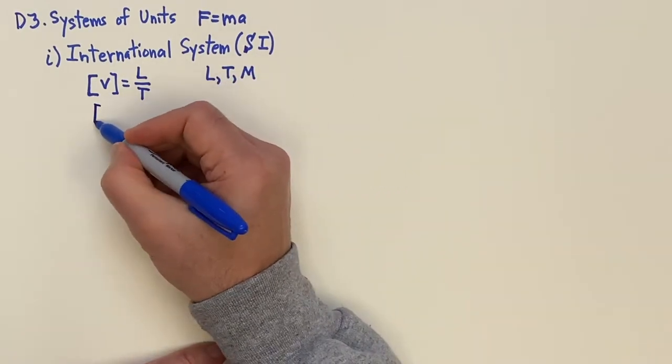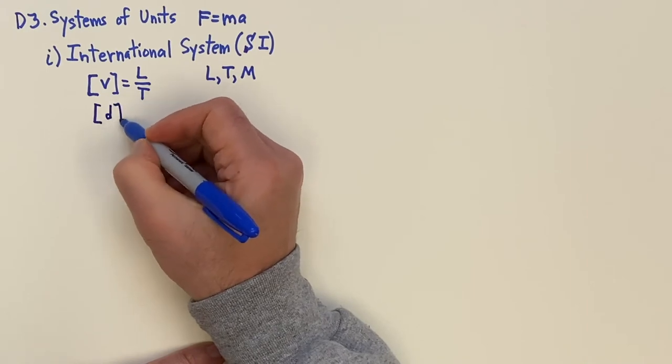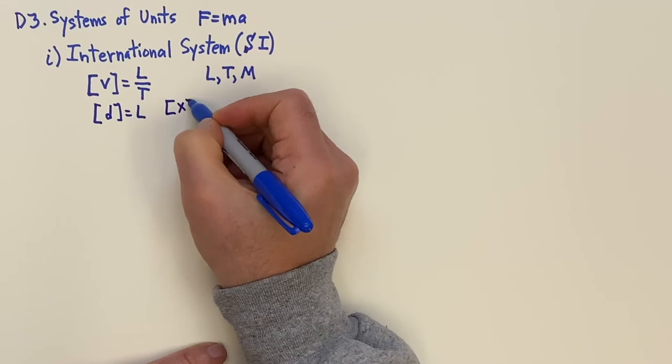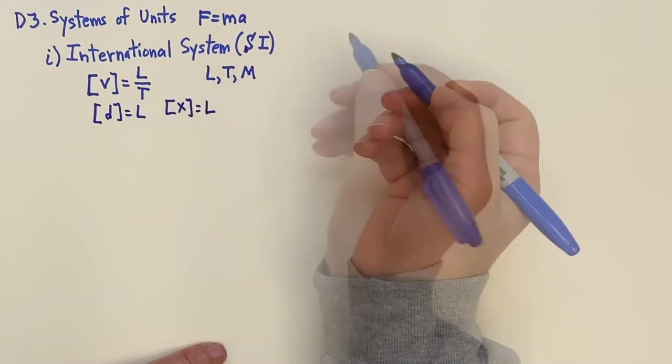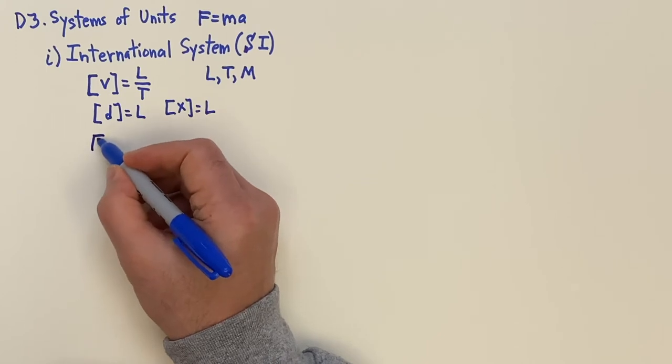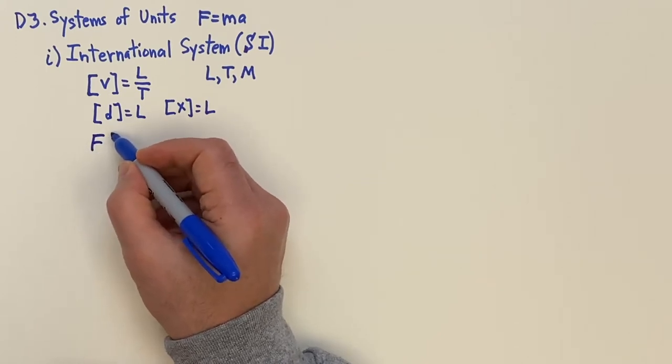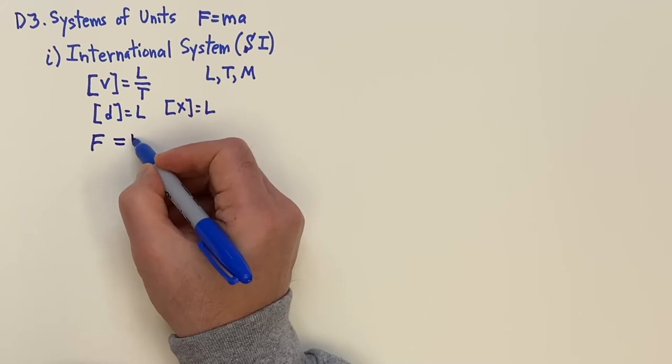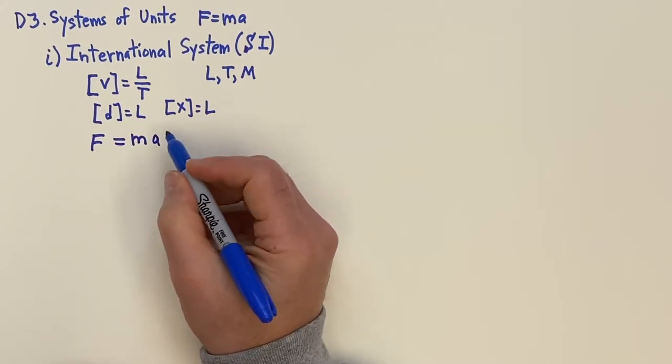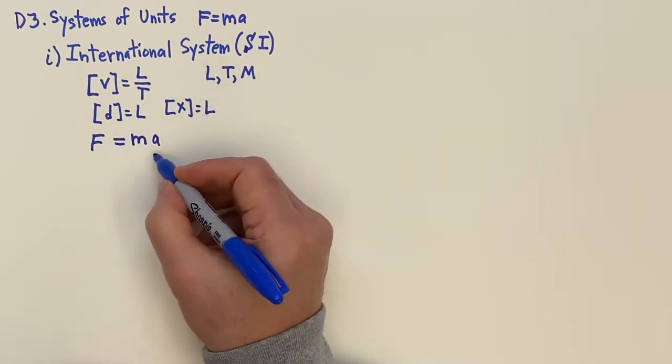So for example, the dimensions of distance would be a length. The dimensions of X is a length. So using F equals MA as a guide, I'm going to say the force, and I'll put F equals MA, and I'll say in the international system of units, the acceleration is meters per second squared.